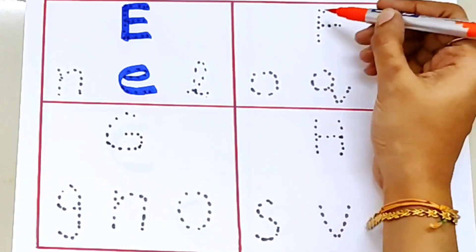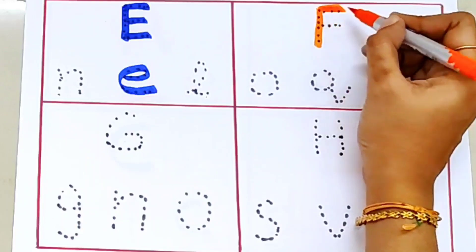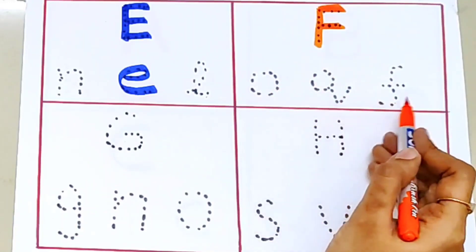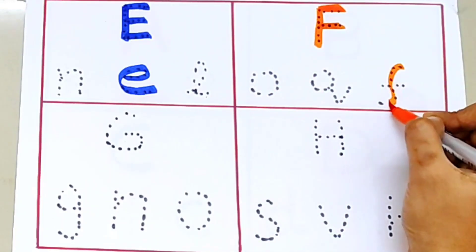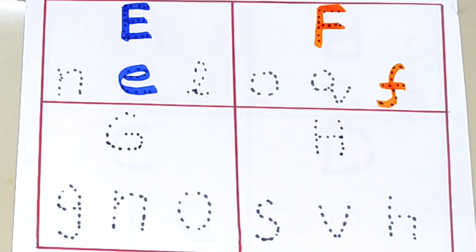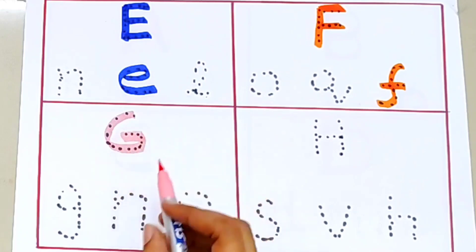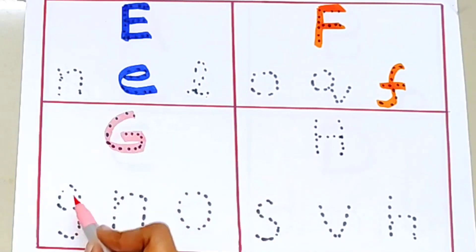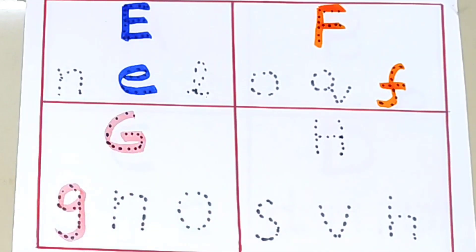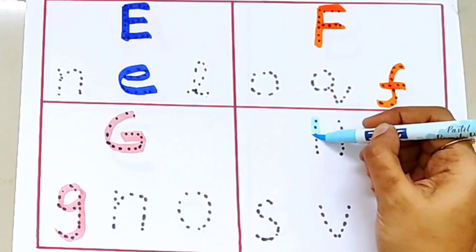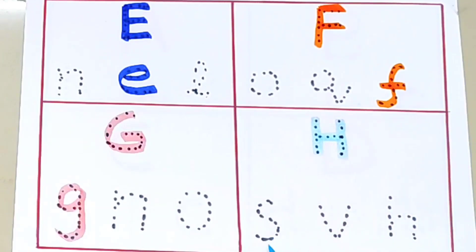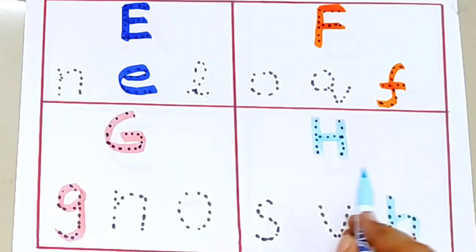Capital F. F for fan. Small f. Capital G. G for giraffe. Small g. Capital G. G for giraffe. Small g. Capital G. Small g.